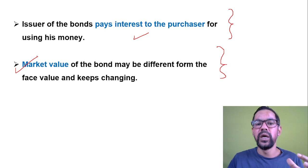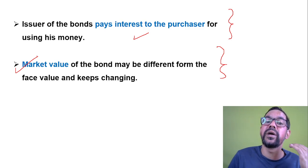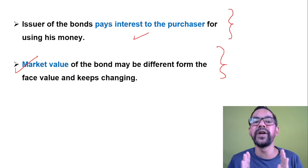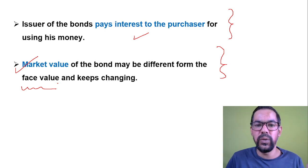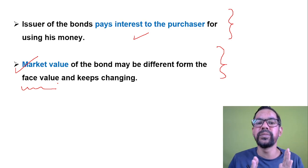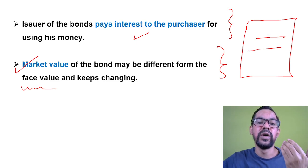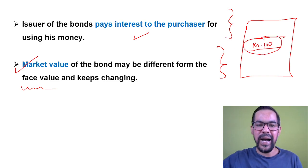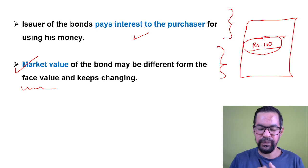The market value of a bond may differ from the face value and keeps changing based on market factors — demand and supply. If there is high demand and investors are continuously investing in a particular bond, the value of that bond will go up. Face value, also known as par value, is the value mentioned on the face of that particular bond — for example, rupees 100. But the market value can be 90 rupees or 110 rupees depending on trading cycles.